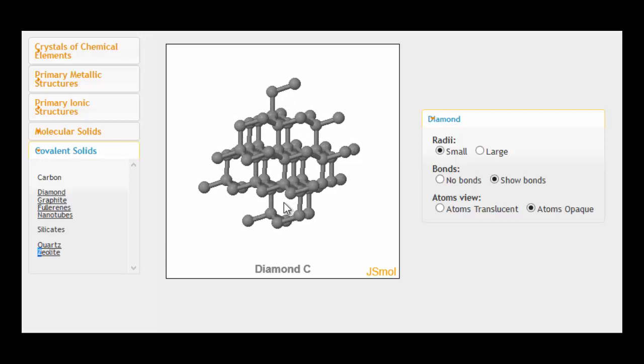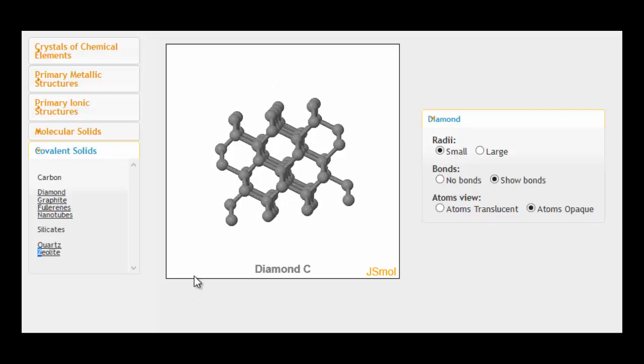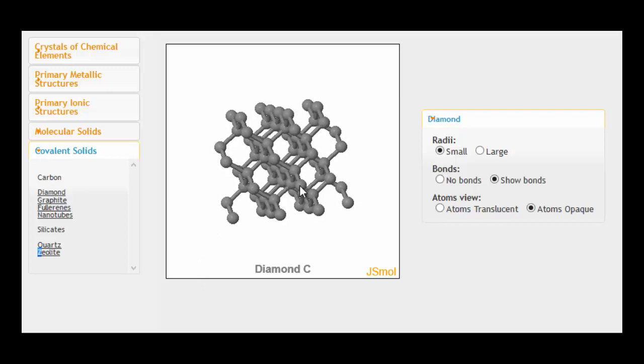And if we move it around to different perspectives, you can see the patterns that are involved in this particular lattice. And once again, the only thing that's limiting the size of this is the number of atoms that we've got. We could just keep on adding carbon atoms to the edge of this to make it bigger and bigger.